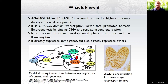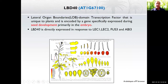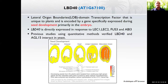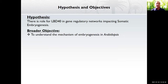LBD40 is the lateral organ boundary domain transcription factor, unique to plants. It is highly expressed in seeds — specifically in the embryo region. LBD40 is directly expressed by the key embryo identity genes. Also, LBD40 and AGL15 have shown yeast two-hybrid interaction, which brings us to our hypothesis that LBD40 has a very important role in gene regulatory networks impacting somatic embryogenesis. My broader objective is to understand the overall mechanism of embryogenesis in Arabidopsis.